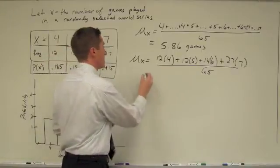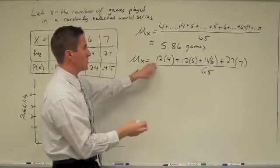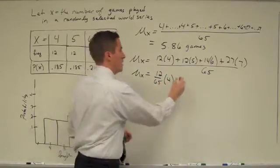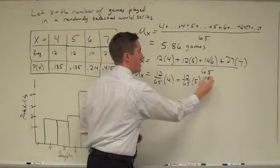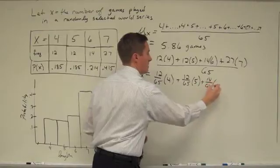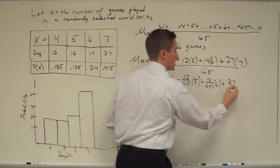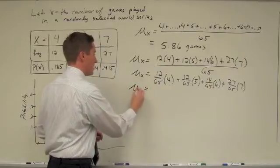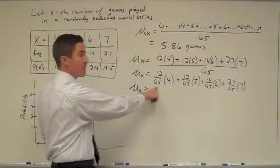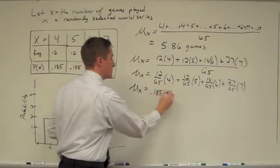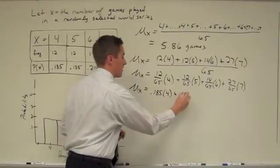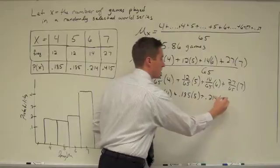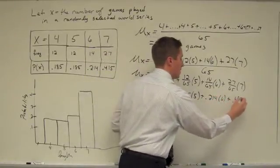Watch what would happen if I used my distributive property here to get this. So the mean of x is actually equal to, so notice it's actually 12 over 65 times 4, plus 12 over 65 times 5, plus 14 over 65 times 6, plus 27 over 65 times 7. And so if you notice this, I can even take this one step further. Take a look what this is coming out to be. So this is the probability times the number of games. So that's 0.185 times 4, plus 0.185 times 5, plus 0.214 times 6, plus 0.415 times 7.